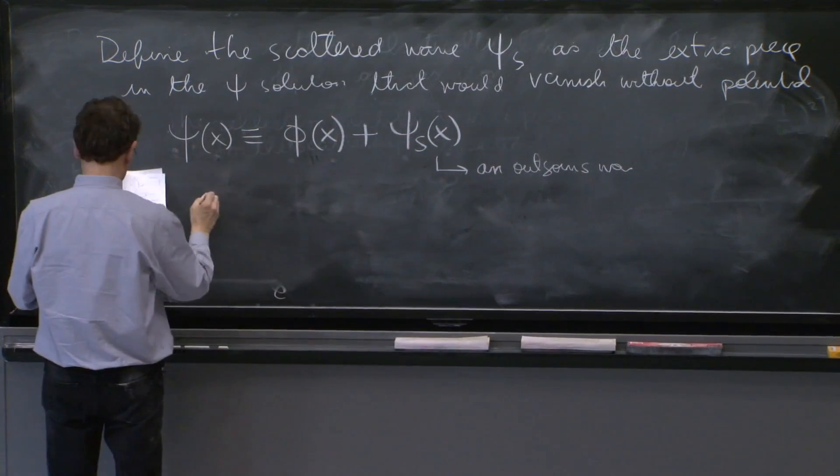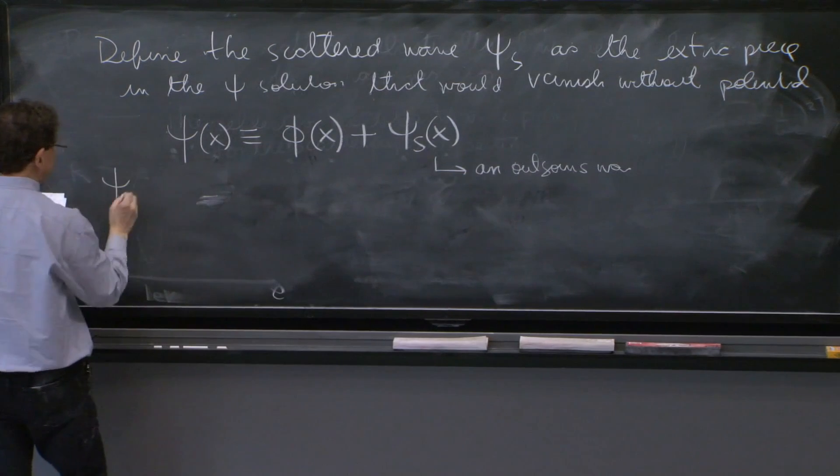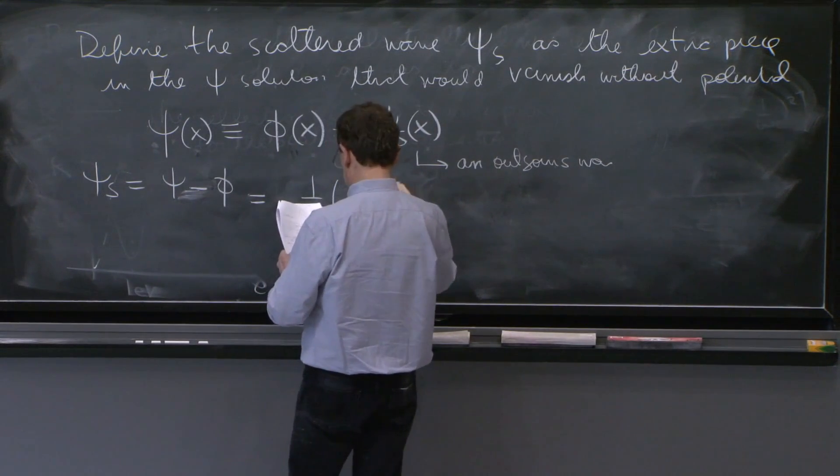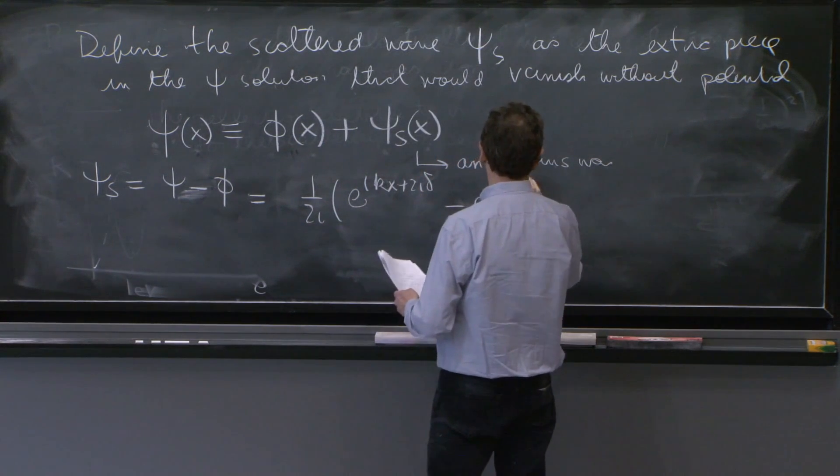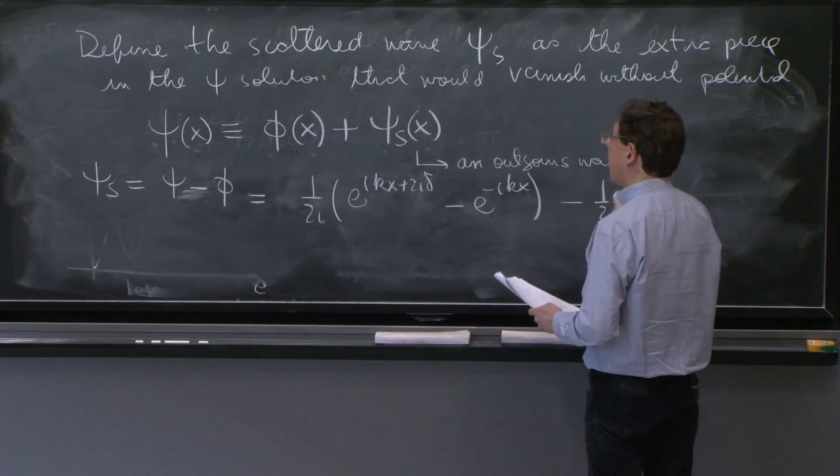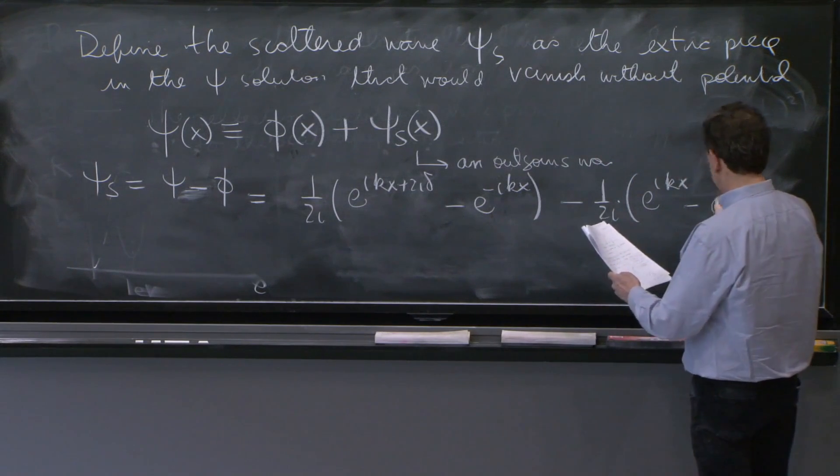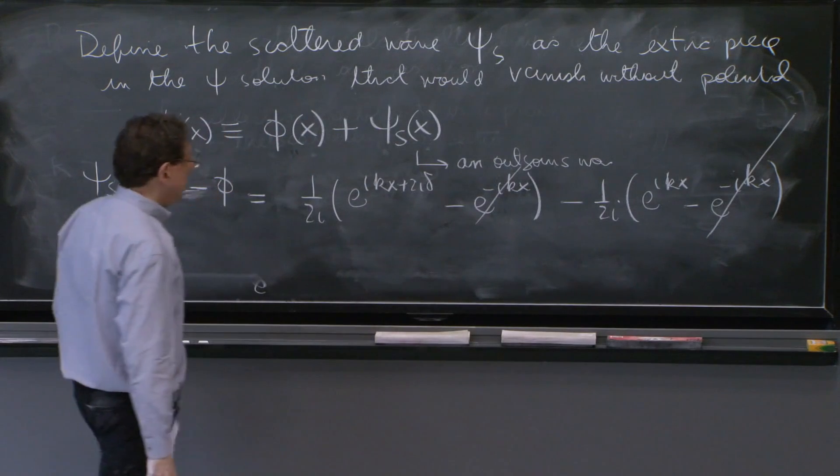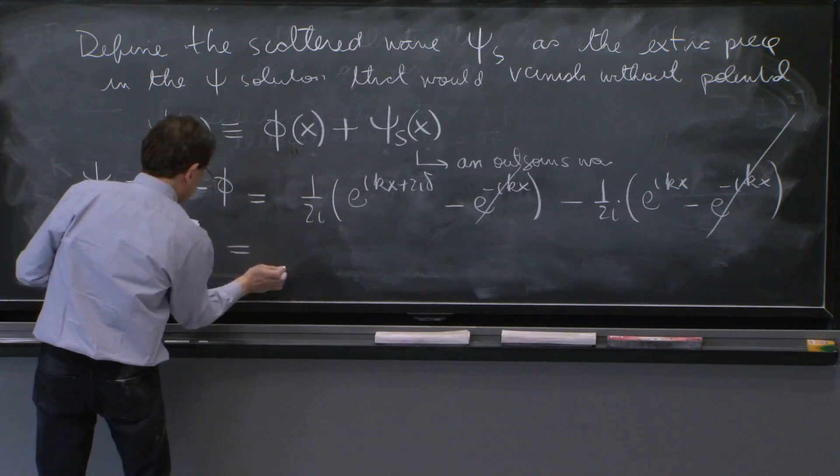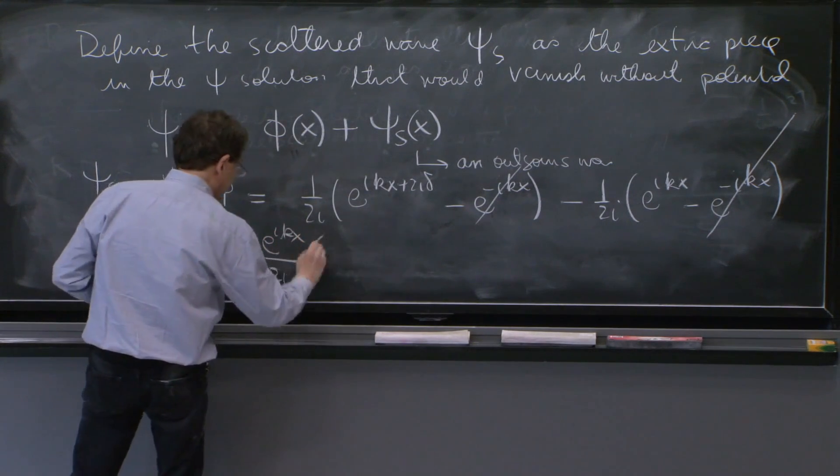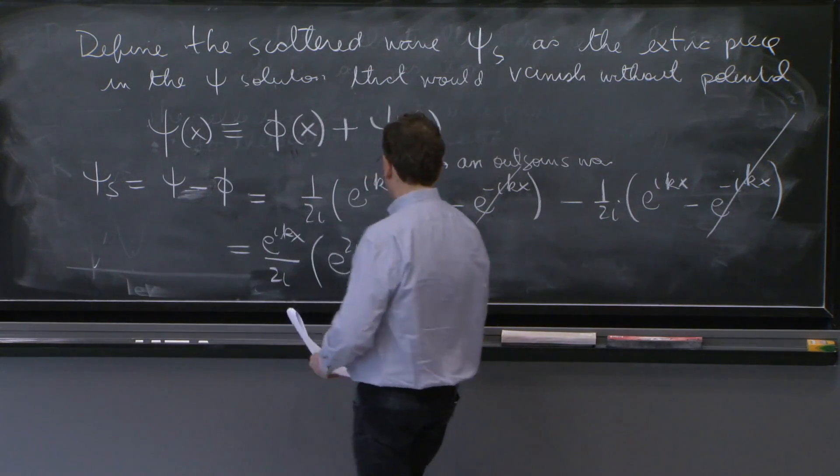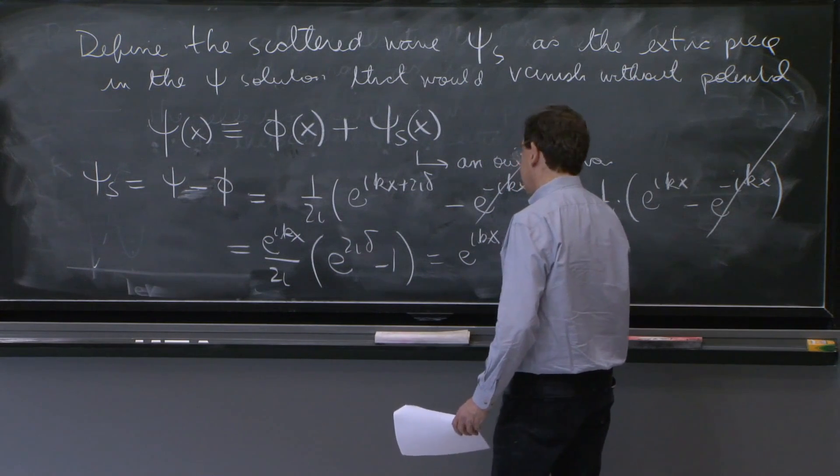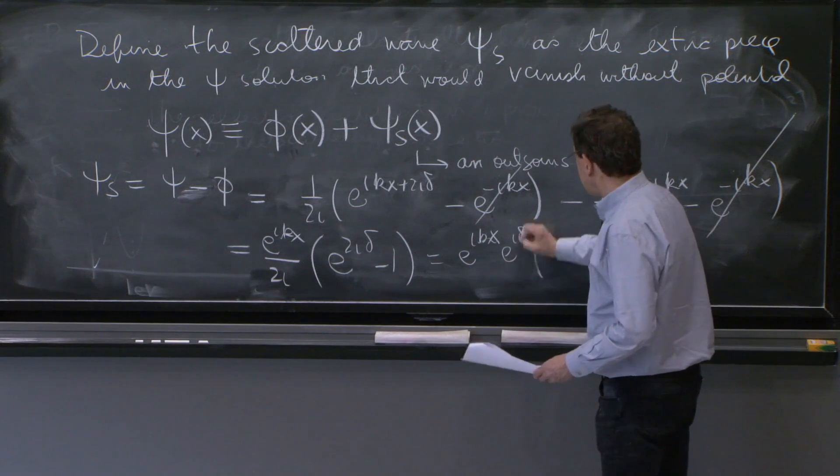So we'll just plug in the formula here. Psi s is equal to psi minus phi. And it's equal to 1 over 2i e to the ikx plus 2i delta minus e to the minus ikx minus 1 over 2i, the phi, e to the ikx minus e to the minus ikx. So the incoming waves were the same. Indeed, they cancel, but the outgoing waves are not. You can factor an e to the ikx, and you get e to the 2i delta minus 1, which is equal to e to the ikx times e to the i delta times sine delta.